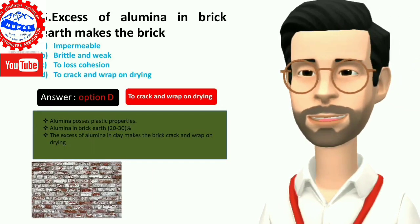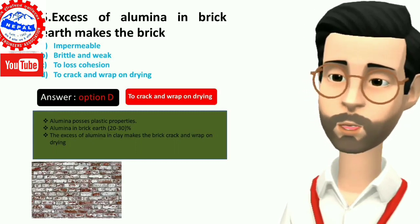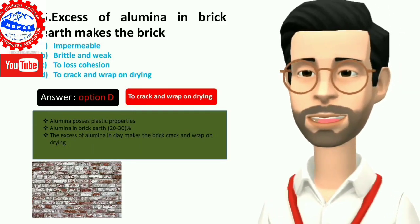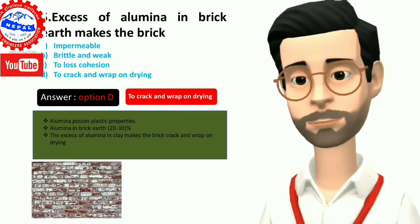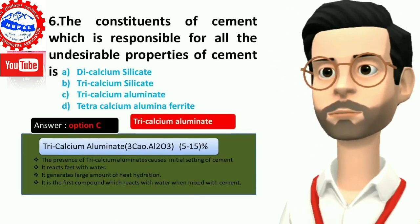Five, excess of alumina in brick earth makes the brick: A) impermeable, B) brittle and weak, C) to lose cohesion, D) to crack and warp on drying. Answer is option D, to crack and warp on drying.